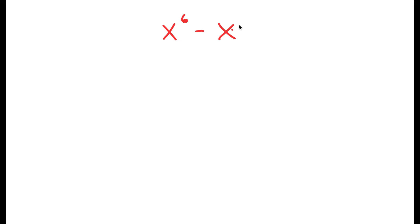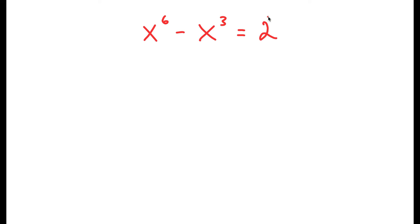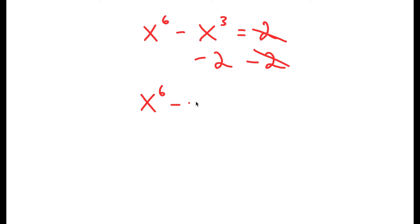In this video, I'm going to solve the equation x to the power of 6 minus x to the power of 3 equals 2. To solve this, I'm going to start by subtracting 2 on both sides, so I get x to the power of 6 minus x to the power of 3 minus 2 equals 0.